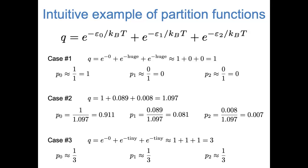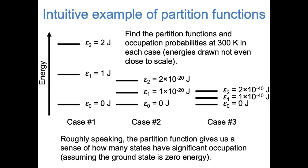There's one more thing to point out. In case one, where there's one state occupied, the partition function equals one. In case three, where three states are occupied, the partition function equals three. In case two, where mostly one state is occupied but a couple of others have some occupation, the partition function is a little more than one. This gives us an interesting intuitive interpretation of the partition function: roughly speaking, it tells us about how many states have significant occupation, assuming the ground state energy is zero.